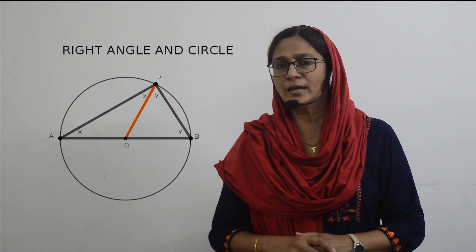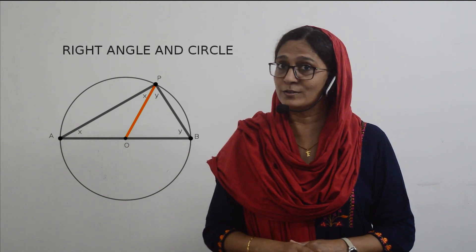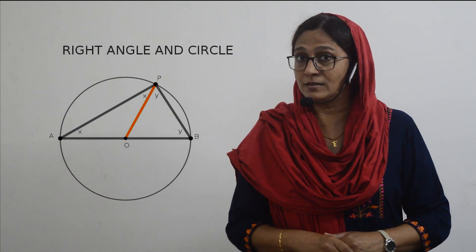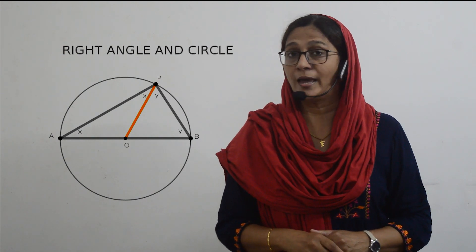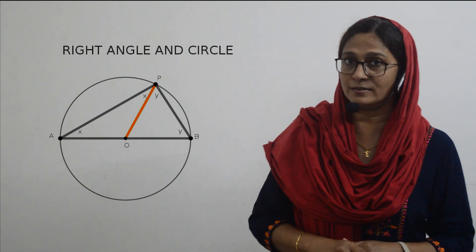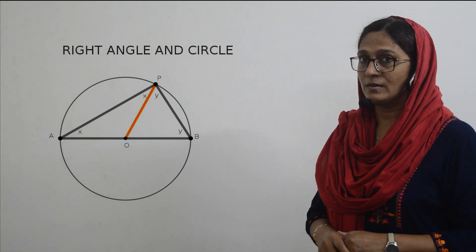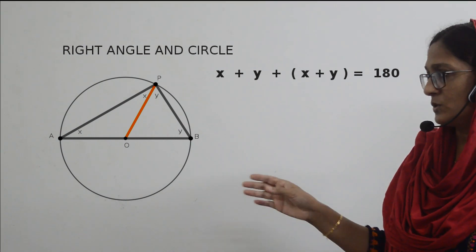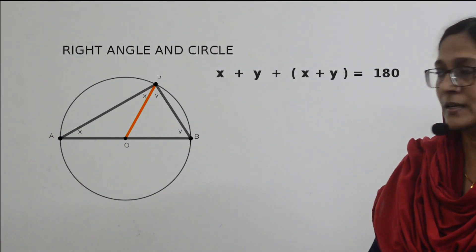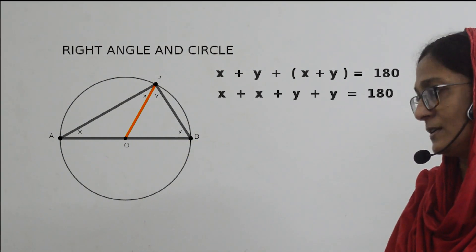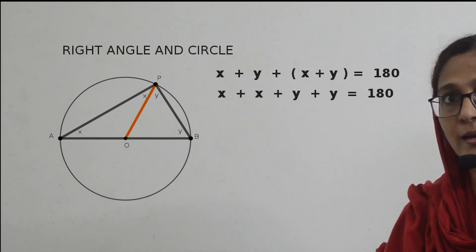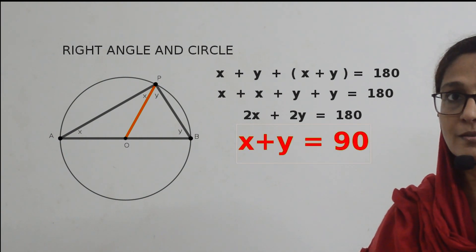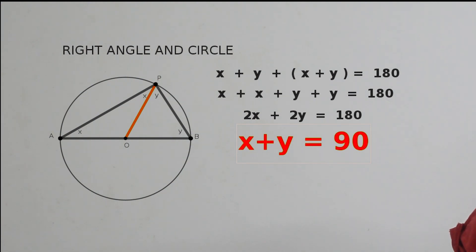Let us consider the full triangle APB. The angles are: angle A = X degrees, angle B = Y degrees, and angle P = X plus Y degrees. Adding all three, we need to get 180 degrees. So: X + Y + X + Y = 180°, which we rewrite as 2X + 2Y = 180°, meaning X + Y = 90 degrees. And X + Y is the angle at P, which we needed to prove.